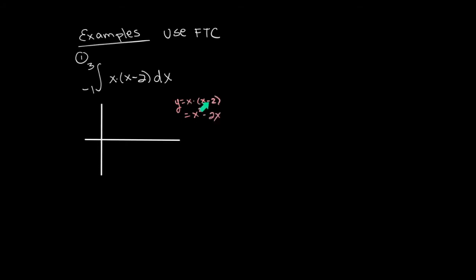And using the factored version up here, you can see that y is equal to 0 if x is equal to 0 or x is equal to 2. So it's a parabola that goes through the axis at x equals 0 and x equals 2. Something like this. We're calculating the net area on the graph of this parabola from x equals negative 1 to x equals 3.